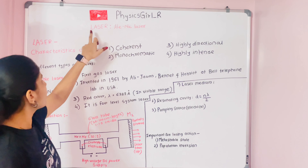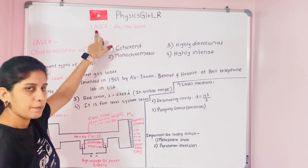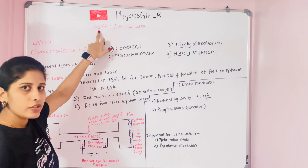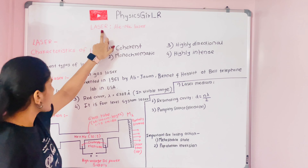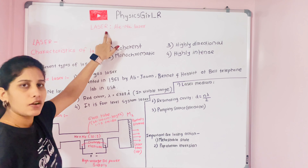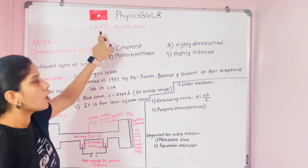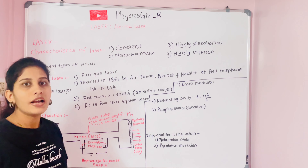So L stands for Light, A for Amplification, S for Stimulated, E for Emission, and R for Radiation. This is the full form of the acronym LASER.